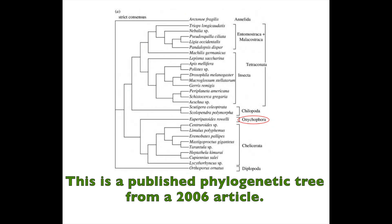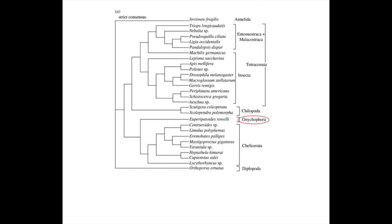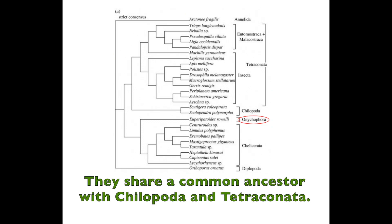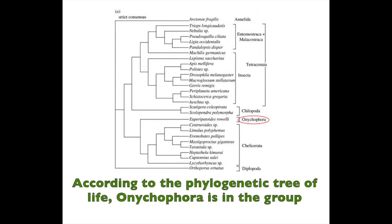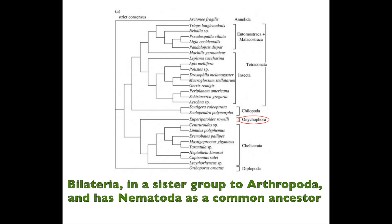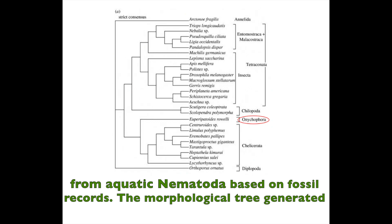This is a published phylogenetic tree from a 2006 article that indicates Onychophora is in a sister group with Chelicerata. They share a common ancestor with Myriapoda and Tetraconata. According to the phylogenetic tree of life, Onychophora is in the group Bilateria, in a sister group to Arthropoda, and has Nematoda as a common ancestor. Therefore, our group hypothesizes that Onychophora originated from aquatic Nematoda based on fossil records.